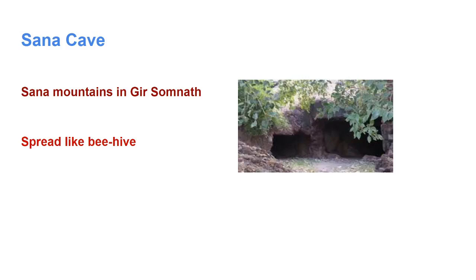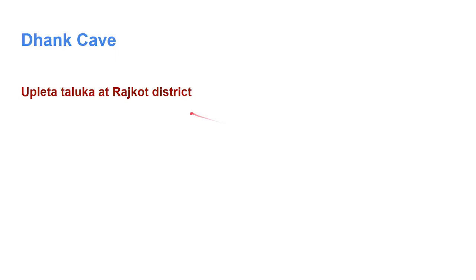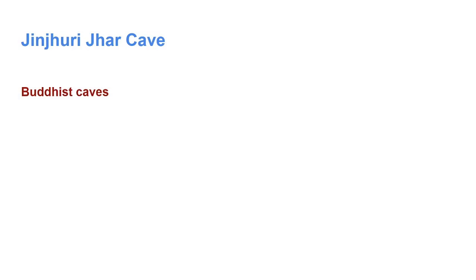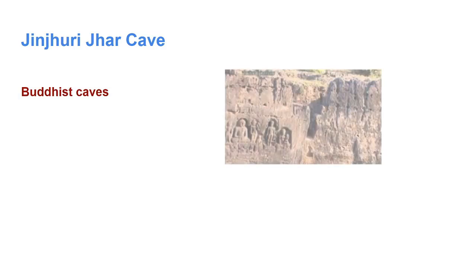Then Dhank cave — Dhank Giri is situated in Dhank village of Upleta Taluka at Rajkot district. It is considered that they might have been built in the beginning of the 4th century. The next one is Jinjuri Jal. There are many Buddhist caves in the west of Dhank, about 7 km from Siddhisar, in the valley of Jinjuri Jal. It is considered that they were built in the 2nd century.